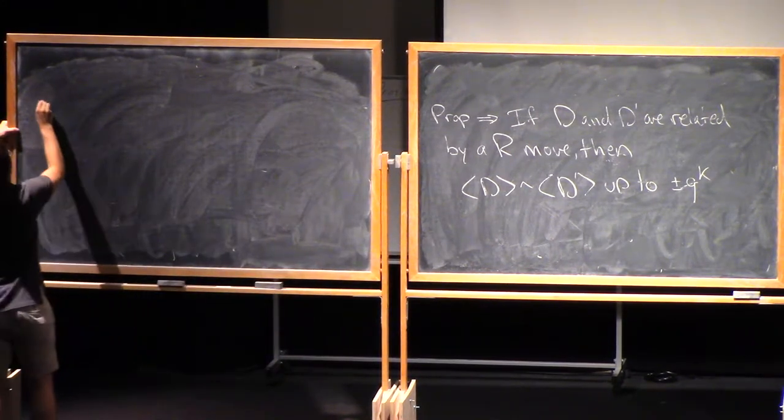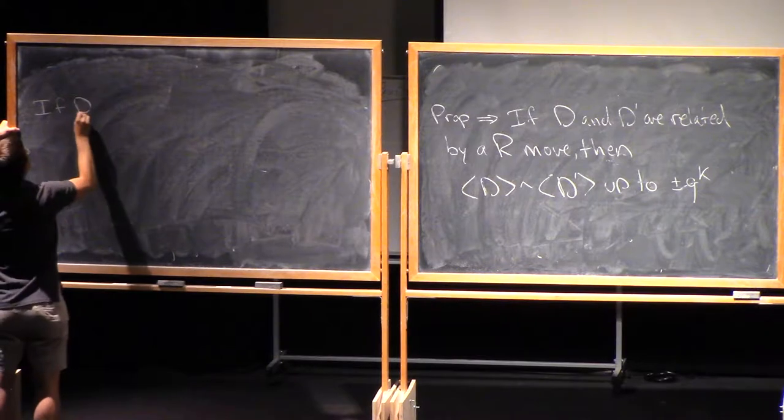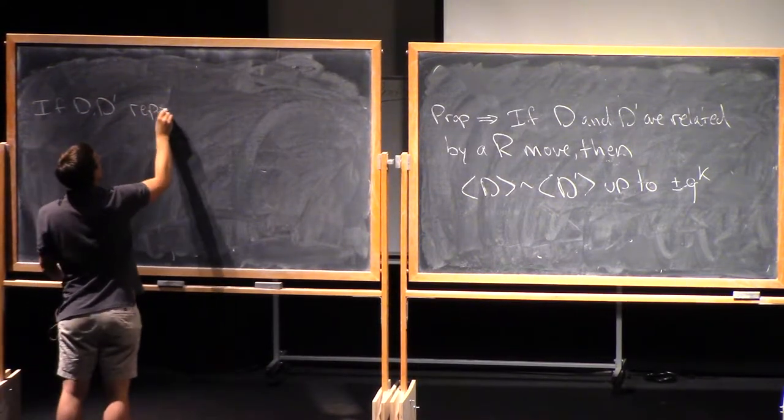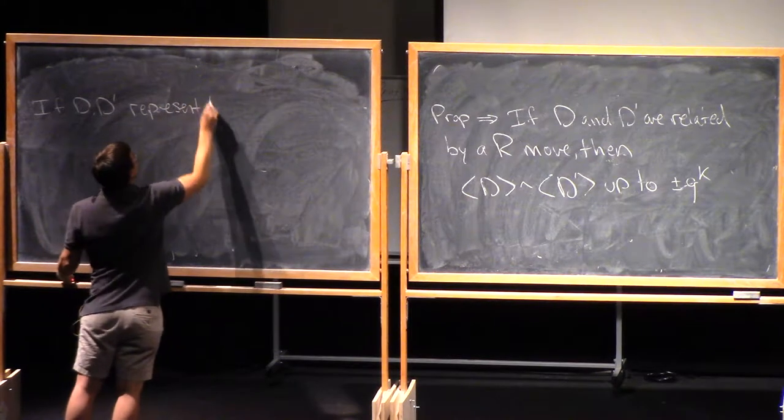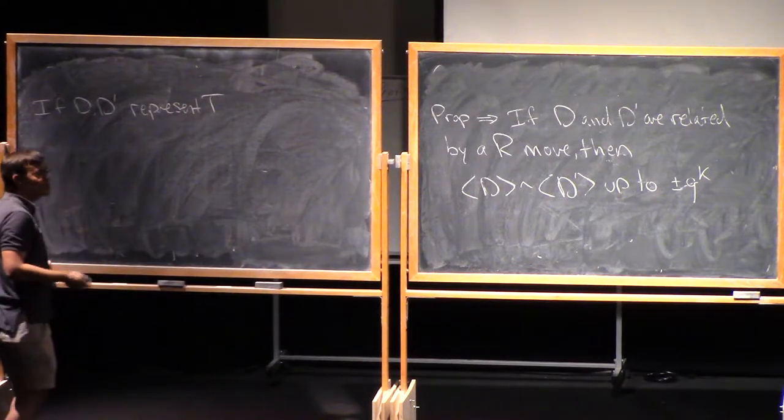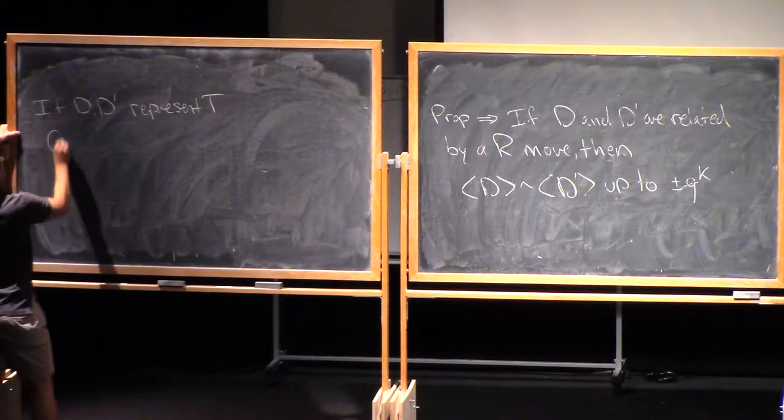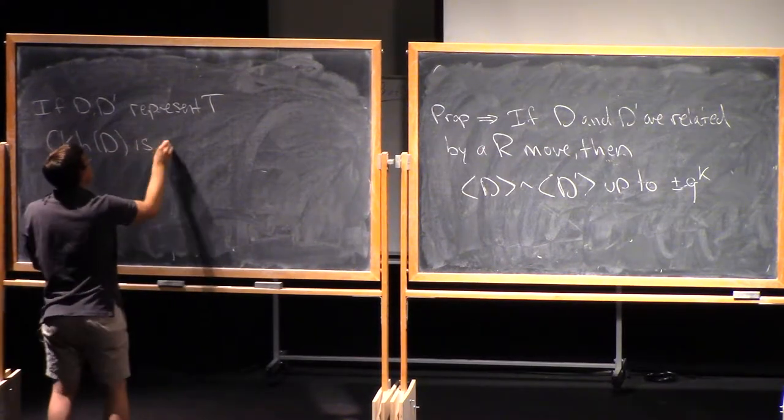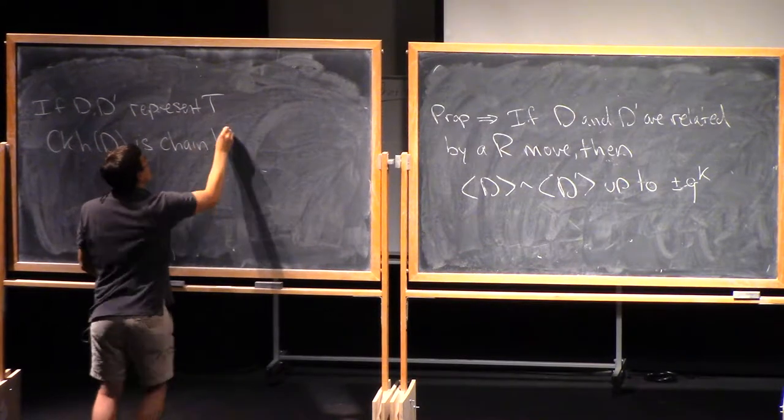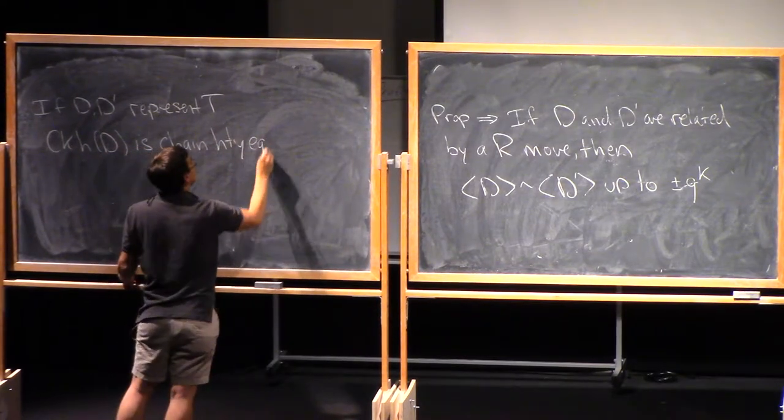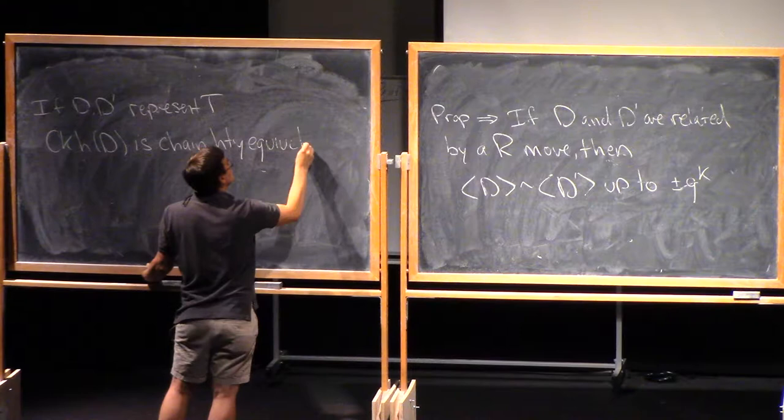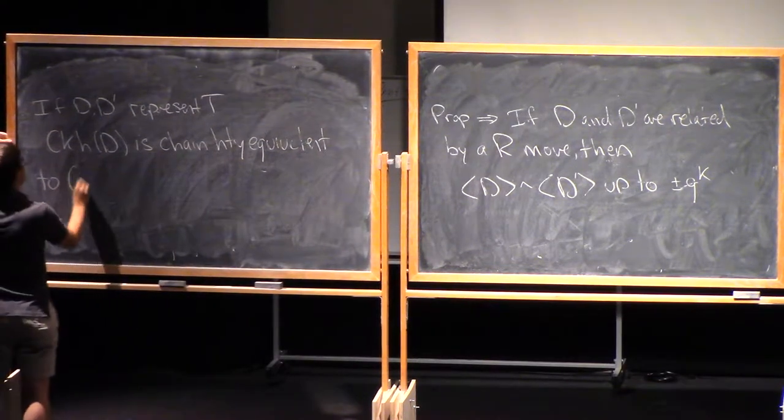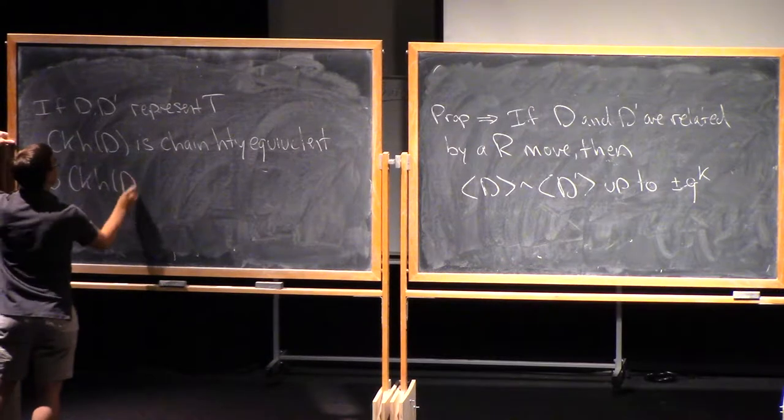If D and D prime both represent T, then they're related by Reidemeister moves and CKH of D is chain homotopy equivalent to CKH of D prime.